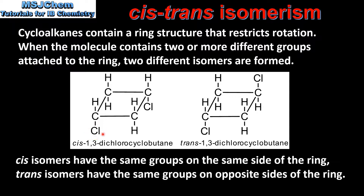If we look at the cis-isomer, it has two chlorine atoms below the plane of the ring, whereas the trans-isomer has one chlorine atom below the plane of the ring and the other chlorine atom above the plane of the ring.